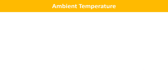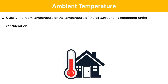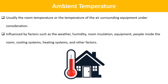The next term is Ambient Temperature. Ambient temperature is usually the room temperature or the temperature of the air surrounding equipment under consideration, such as a computer or power supply unit. Ambient temperature in a room is influenced by factors such as the weather, humidity, room insulation, equipment, people inside the room, cooling systems, heating systems, and other factors.